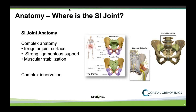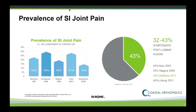It has a complex anatomy — an irregular joint surface with lots of ligamentous support and muscular stabilization, and a complex innervation pattern. But that complex anatomy makes it difficult to image. SI joint pain is very prevalent; we see it in probably somewhere between 15 and 30 percent of people that have low back pain, and in a higher percentage of people that have had a lumbar fusion.